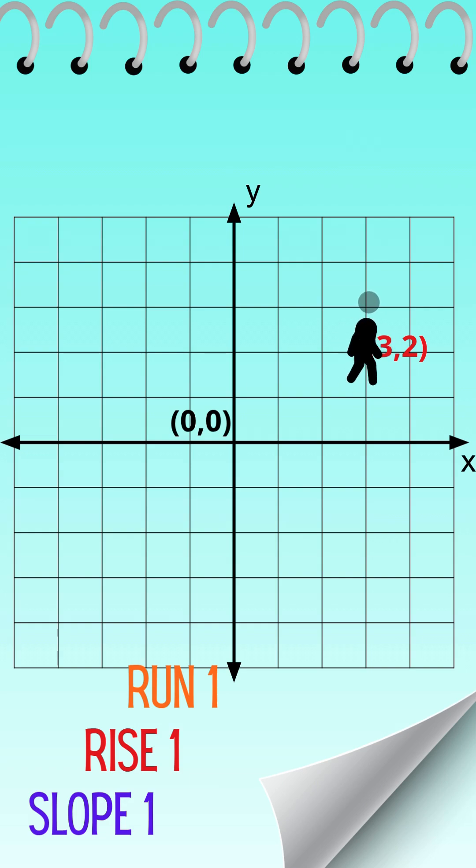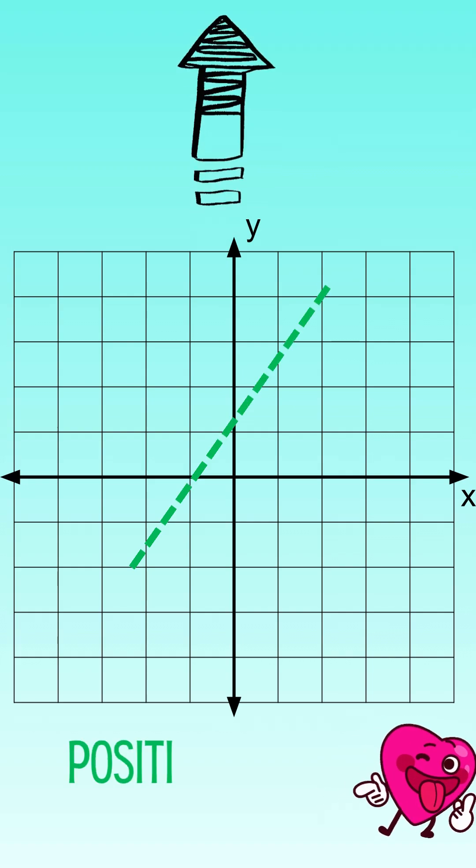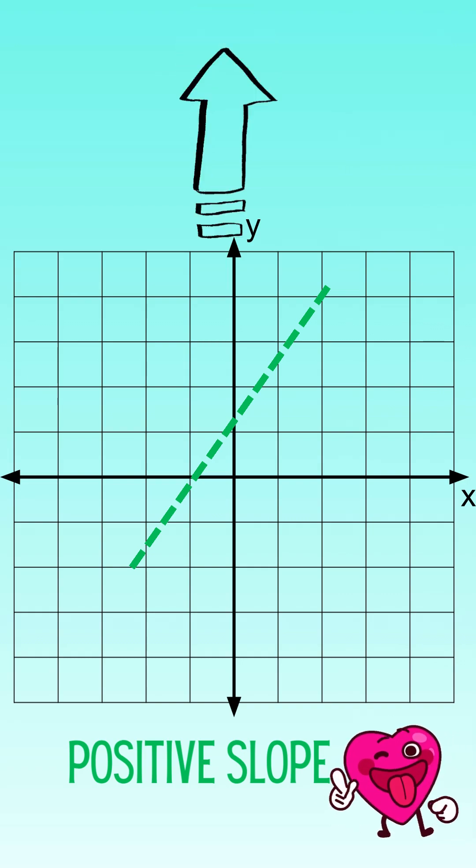But graphs don't just show points, they also show lines, and that's where slope comes in. Slope tells us how steep a line is or how fast it climbs or falls.